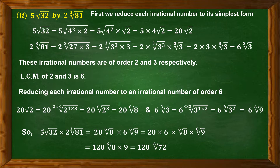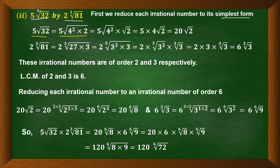Let us take the second example: 5 into square root of 32 multiplied by 2 into cube root of 81. The order is not the same — here it is square root, here it is cube root — and they are not in simplest form. So let us reduce each irrational number to simplest form first. 32 is 16 into 2, and 16 can be written as 4 square into 2. So we have 5 into square root of 4 square into 2, which splits to 5 into square root of 4 square into square root of 2. Square root of 4 square is 4, so 5 into 4 is 20, and the simplest form is 20 into root 2.